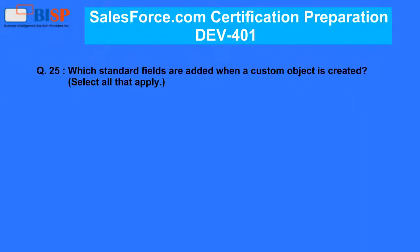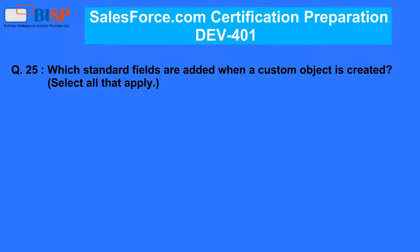Question 25. Which standard fields are added when a custom object is created? A. Last modified by. B. Identity. C. Type. D. Name.